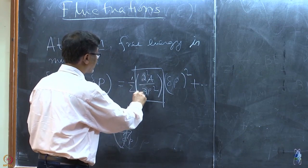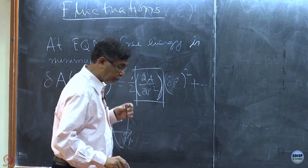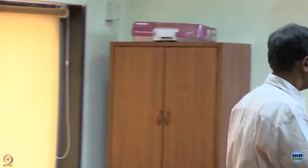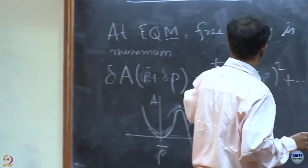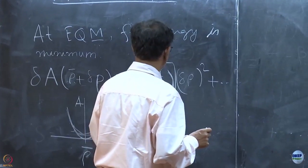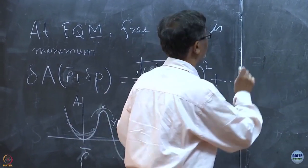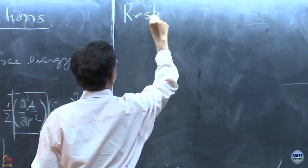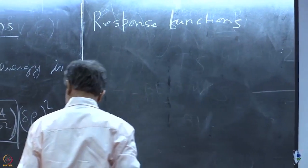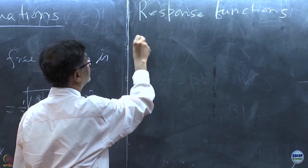We want to talk about this quantity — what is it — so this is the chapter you can read where fluctuations are discussed. The basic idea is that these fluctuations are the most important quantity, because the second derivative determines the response of the system to a fluctuation. That is called the linear response or response functions.